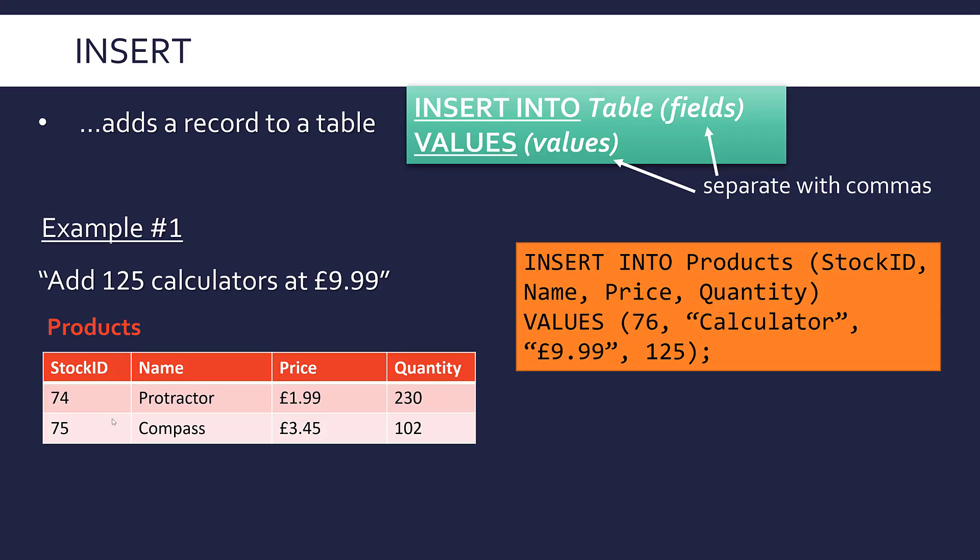So StockID is our primary key. Therefore that needs to be unique. So all I've done is added one to that previous StockID. If I added 75 here, that would be wrong because it needs to be unique. The other information comes from this scenario. So Calculator, 9.99, and 125 match up to our fields. So what it's doing is looking one by one. So StockID is 76, Name is Calculator, Price is 9.99, Quantity is 125. It's matching those up, these two separate lists. And so when I run this query, we add a new record to the table which matches up to what I have said.